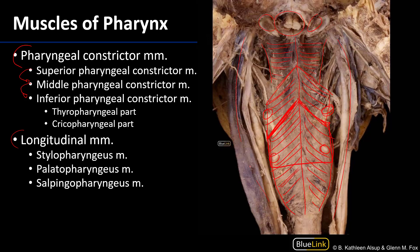Approximately this portion of the thyroid cartilage is the thyropharyngeal part. The inferior portion is the cricopharyngeal part.